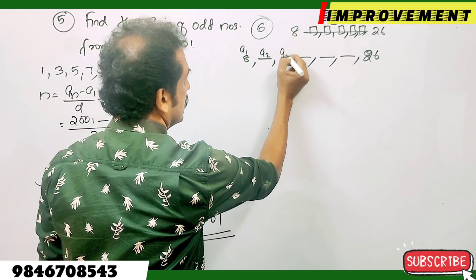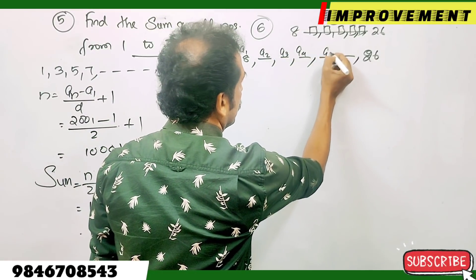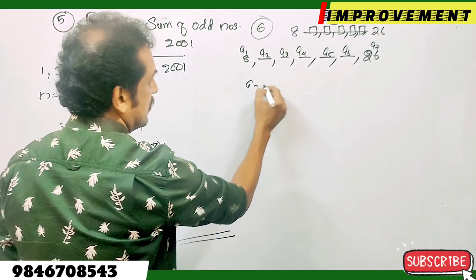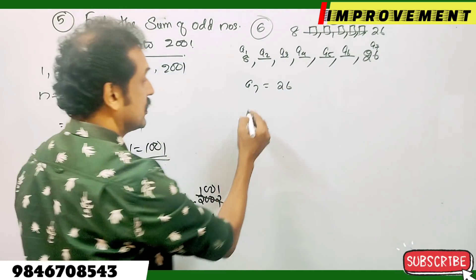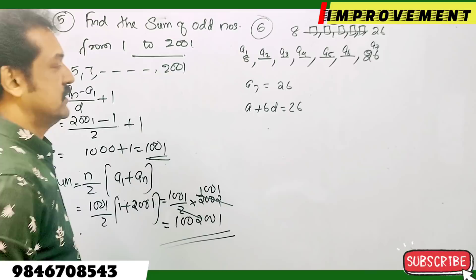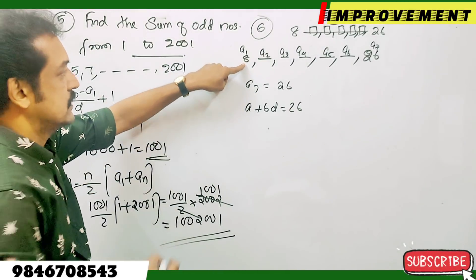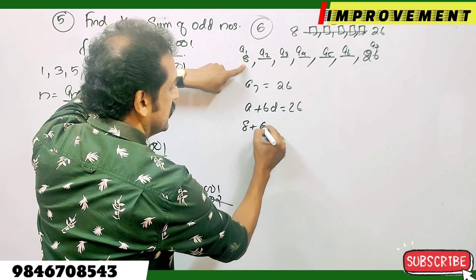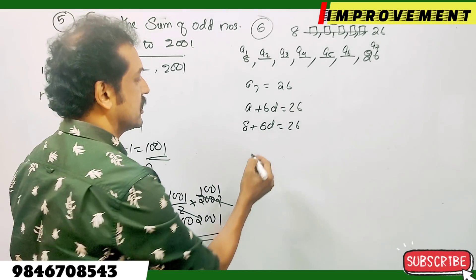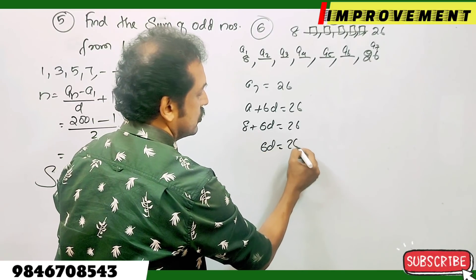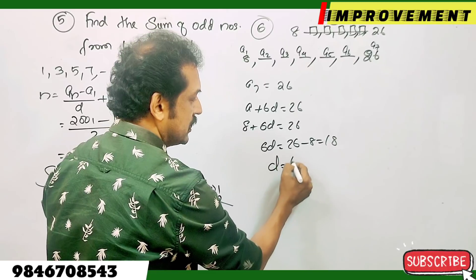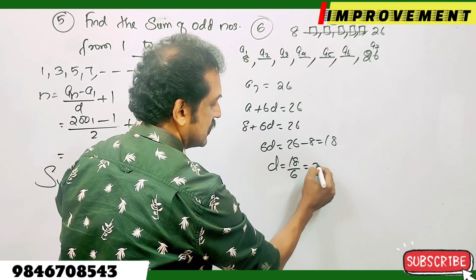We label the terms A1, A2, A3, A4, A5, A6, A7 — so A7 is the 7th term. The formula is A plus 6D equals 26. A, the first term, is 8. So 8 plus 6D equals 26, giving 6D equals 18, therefore D equals 18 divided by 6, which is 3.